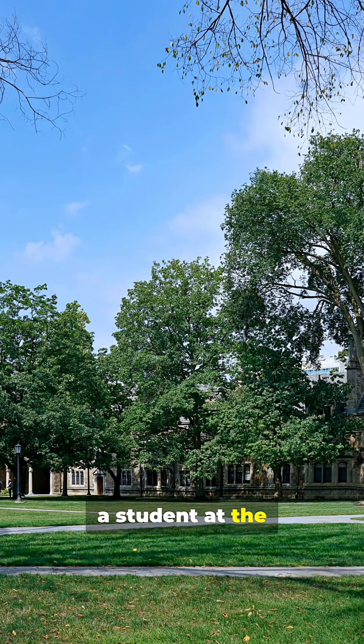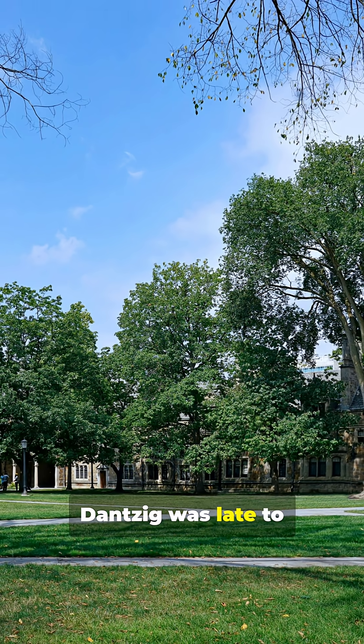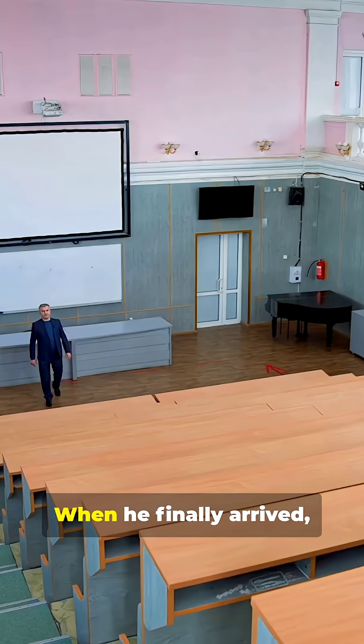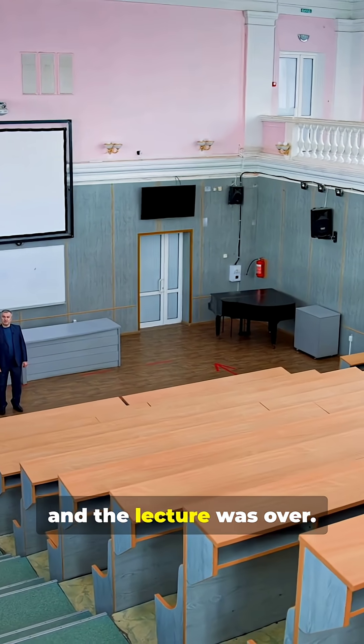In 1939, a student at the University of California, Berkeley named George Danzig was late to his statistics class. When he finally arrived, the professor, Jersey Neyman, had already left, and the lecture was over.